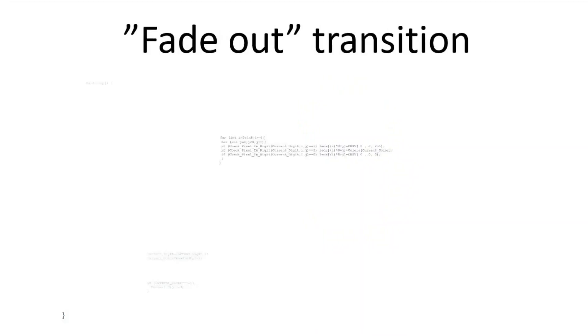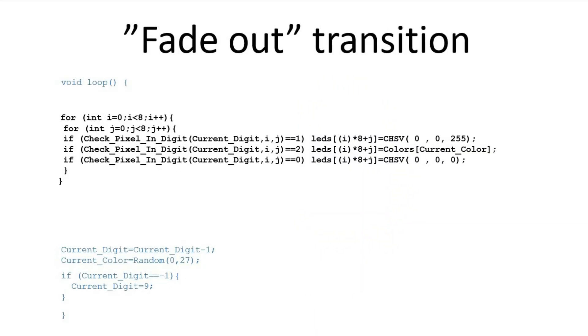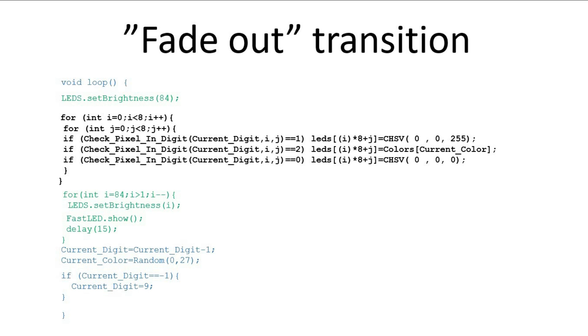The next transition is nearly identical. The only thing we are adding is a fading out effect. After displaying each digit, we fade out the LEDs until the digit completely disappears. Only then is the next digit displayed.